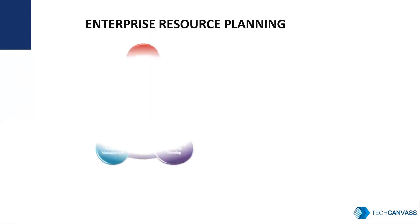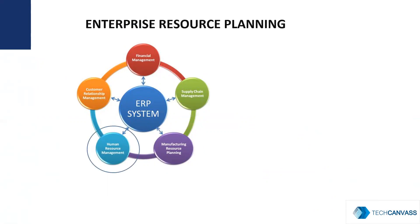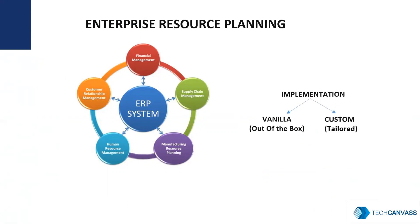A typical ERP system is tightly integrated with different subsystems or departments. As you can see, the ERP system interacts with Financial Management, Supply Chain Management, Manufacturing, Human Resource Management, and Customer Relationship Management. The ERP software can be implemented with vanilla flavor, that is called out-of-the-box — meaning as the product is — or can be customized as per the organization's need.